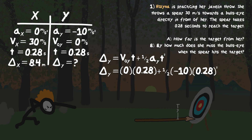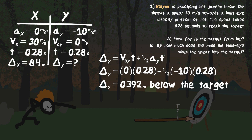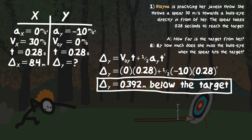Displacement in the Y equals V-initial-Y times T plus one-half times A-Y times T-squared. Plugging in: the initial velocity is zero, time is 0.28, plus one-half times negative 10 times 0.28 squared. This gives us negative 0.392 meters. So she misses the bullseye by 0.392 meters below the target.